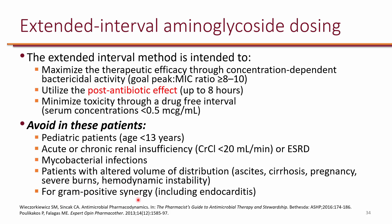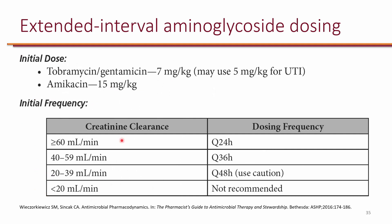For gram-positive synergy, traditional dosing should always be used. With the Hartford nomogram, the initial dose is 7 mg/kg for gentamicin or tobramycin, and approximately twice that — 15 mg/kg — for amikacin. For normal renal function, this is once-daily dosing. However, if the patient has renal insufficiency — for example, a creatinine clearance of 40 to 59 — the frequency is set to every 36 hours. For a creatinine clearance of 20 to 39, the frequency is set to every 48 hours.